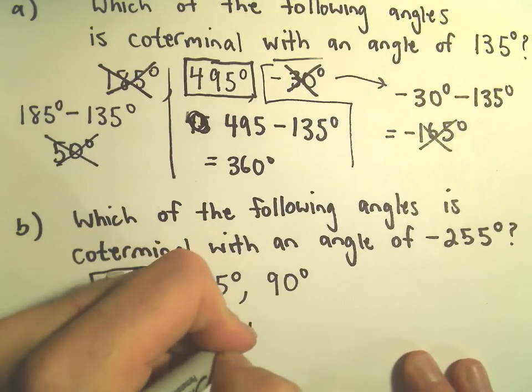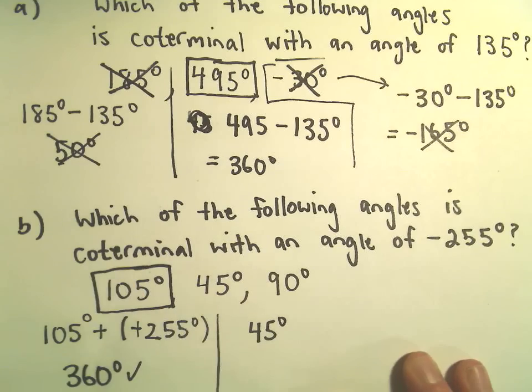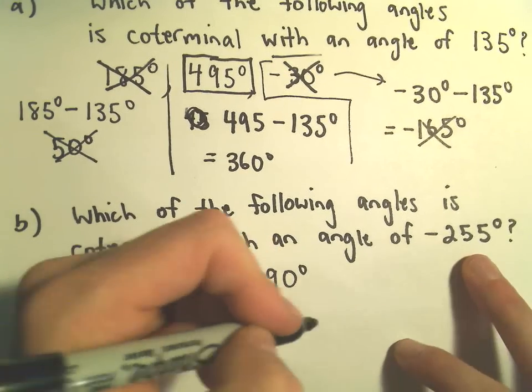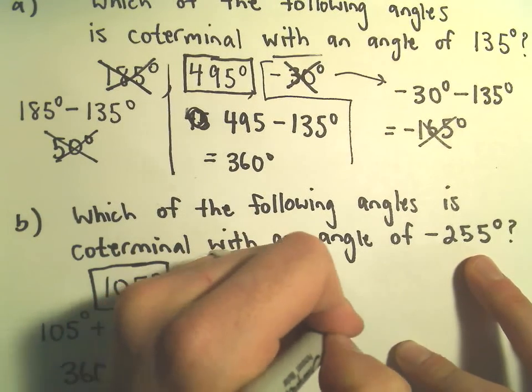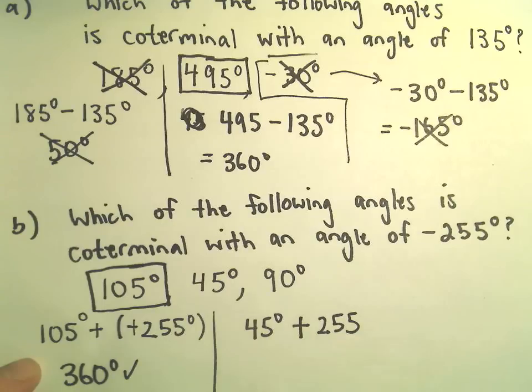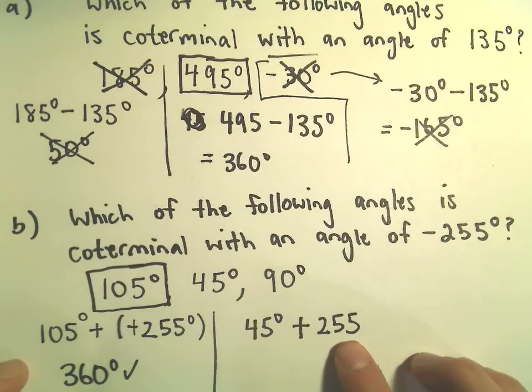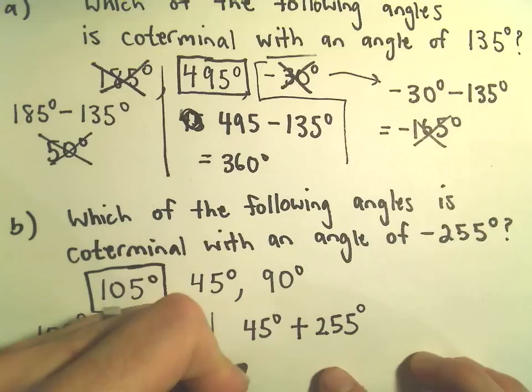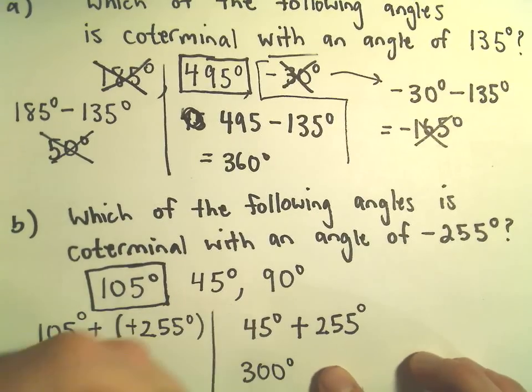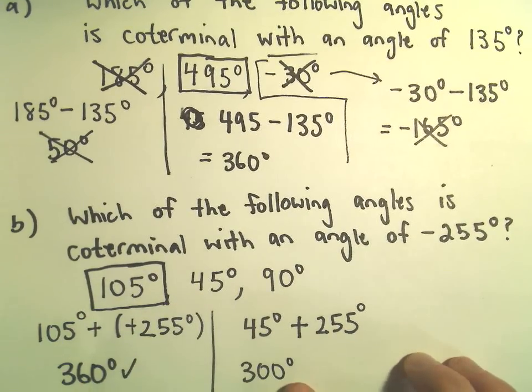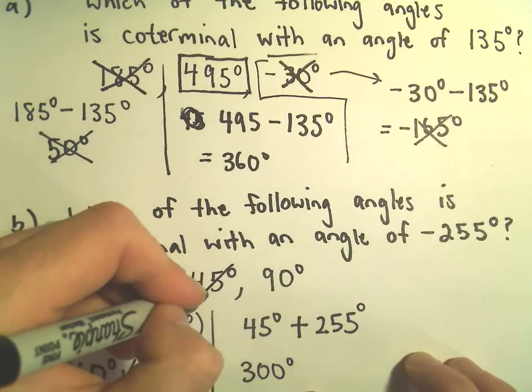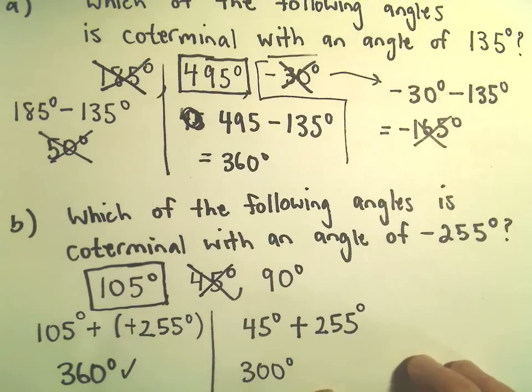Let's check 45 degrees. So if we do 45 degrees minus our negative 255, again, that's just going to make it positive just like in the last example. Well, 45 degrees plus 255 degrees is going to give us 300 degrees. Well again, that's not a multiple of 360, so 45 degrees is not coterminal.